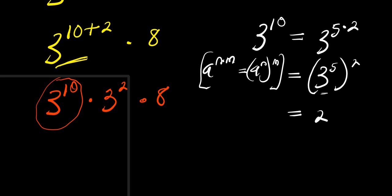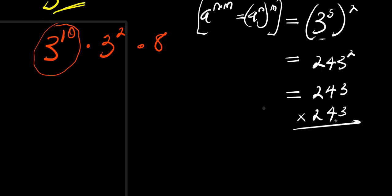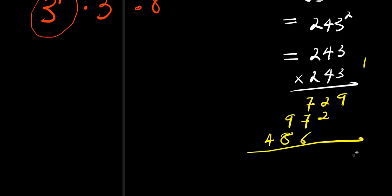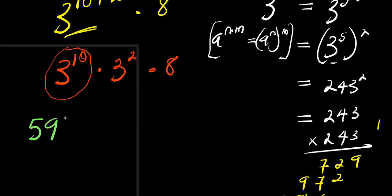So three to the power ten equals 243 to the power two, which means 243 times 243. Carrying out the long multiplication gives us 59,049. So three to the power ten equals 59,049.